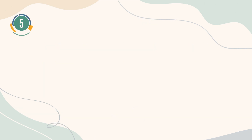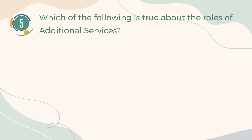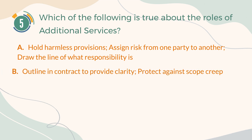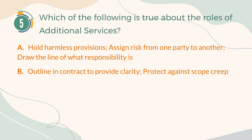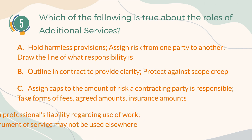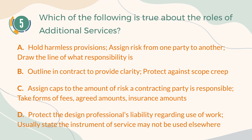Number 5. Which of the following is true about the roles of additional services? A. Hold harmless provisions — assign risk from one party to another, draw the line of what responsibility is. B. Outline in contract to provide clarity, protect against scope creep. C. Assign caps to the amount of risk a contracting party is responsible; take forms of fees, agreed amounts, insurance amounts. D. Protect a design professional's liability regarding use of work; usually state the instrument of service may not be used elsewhere.